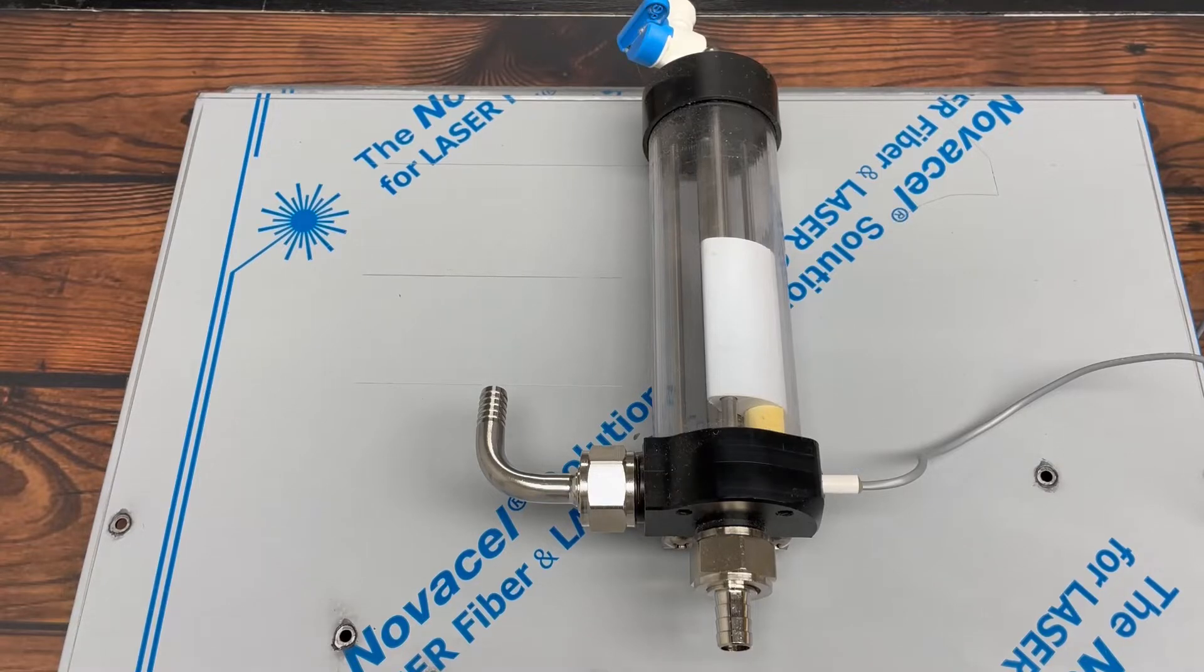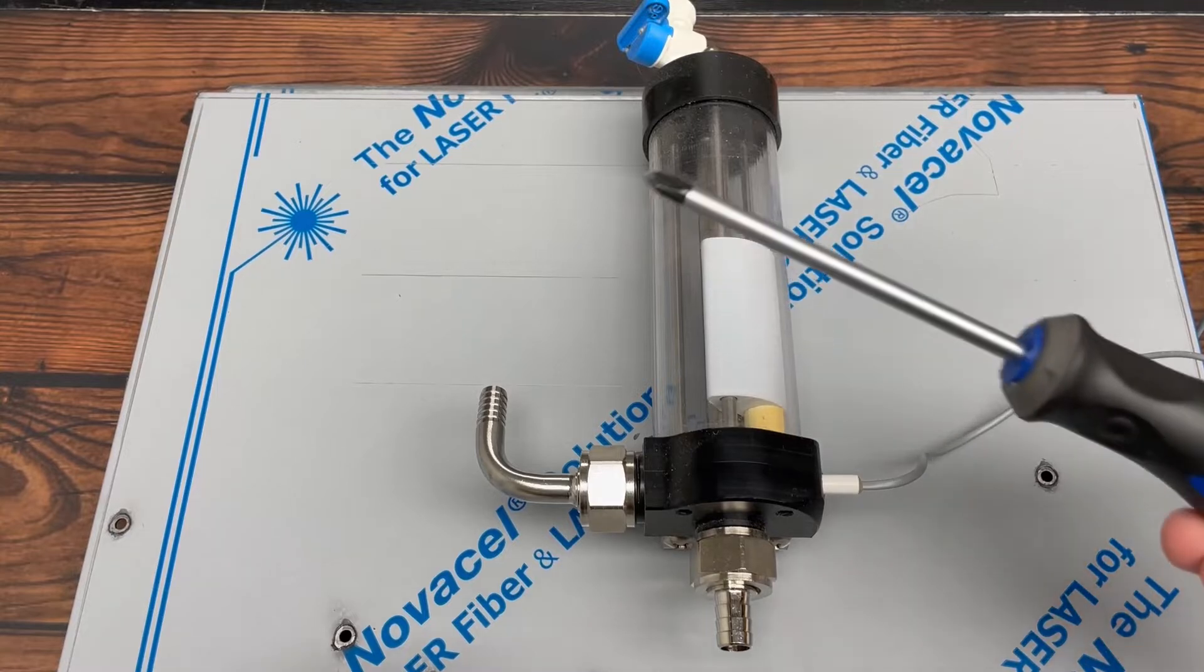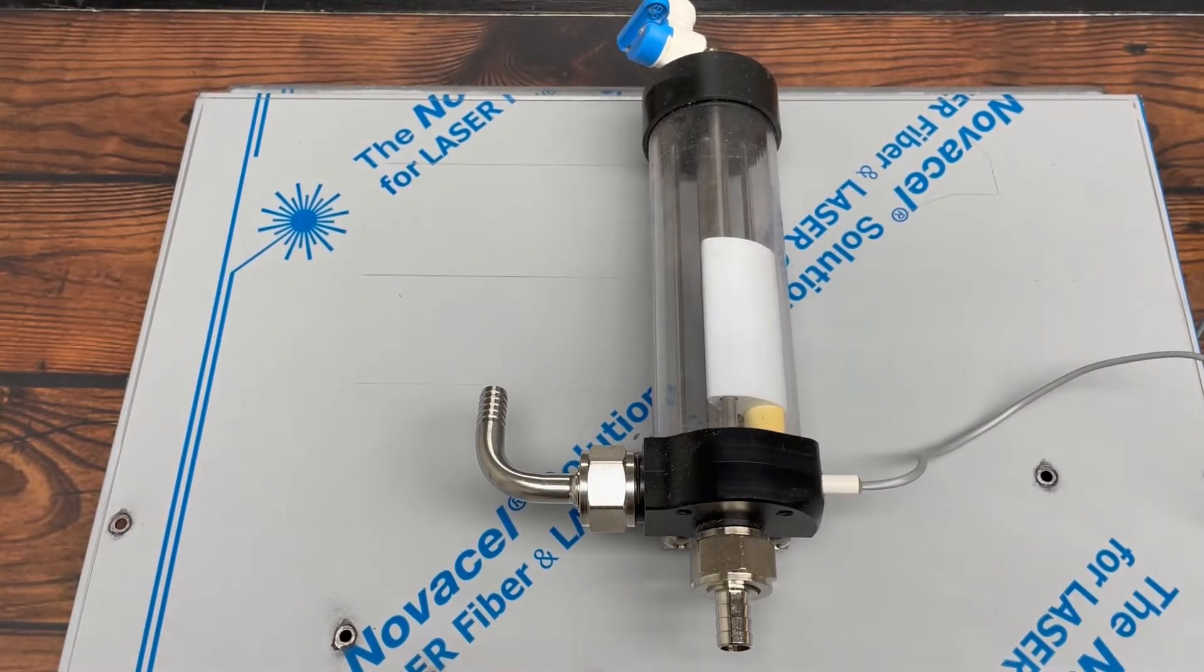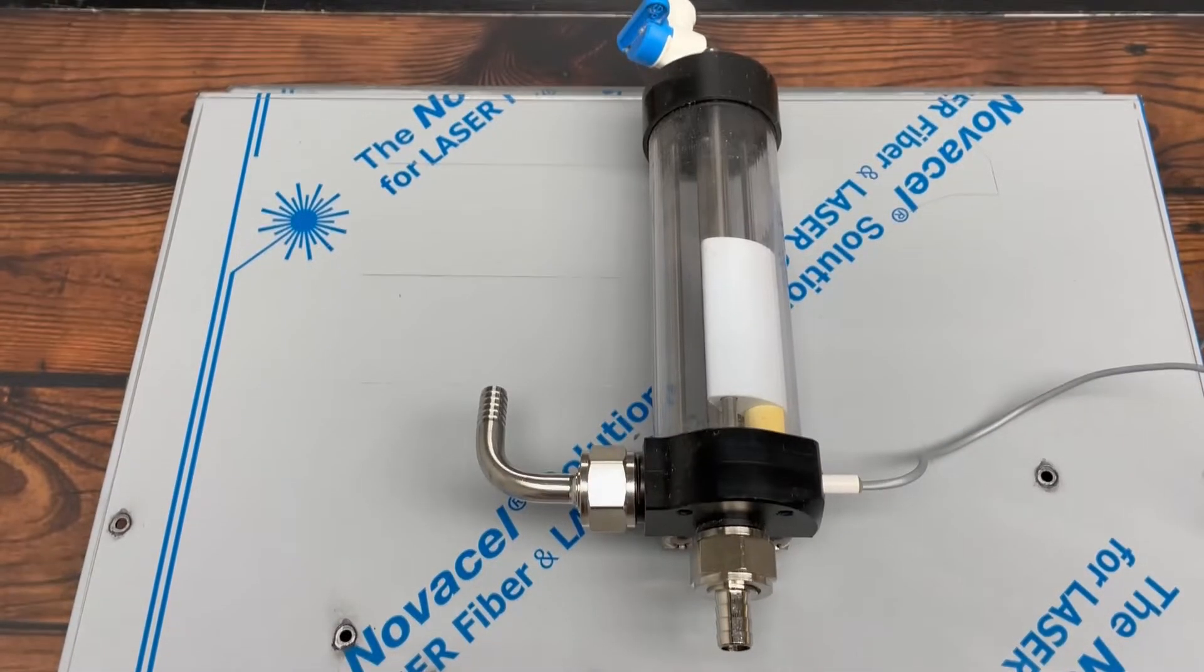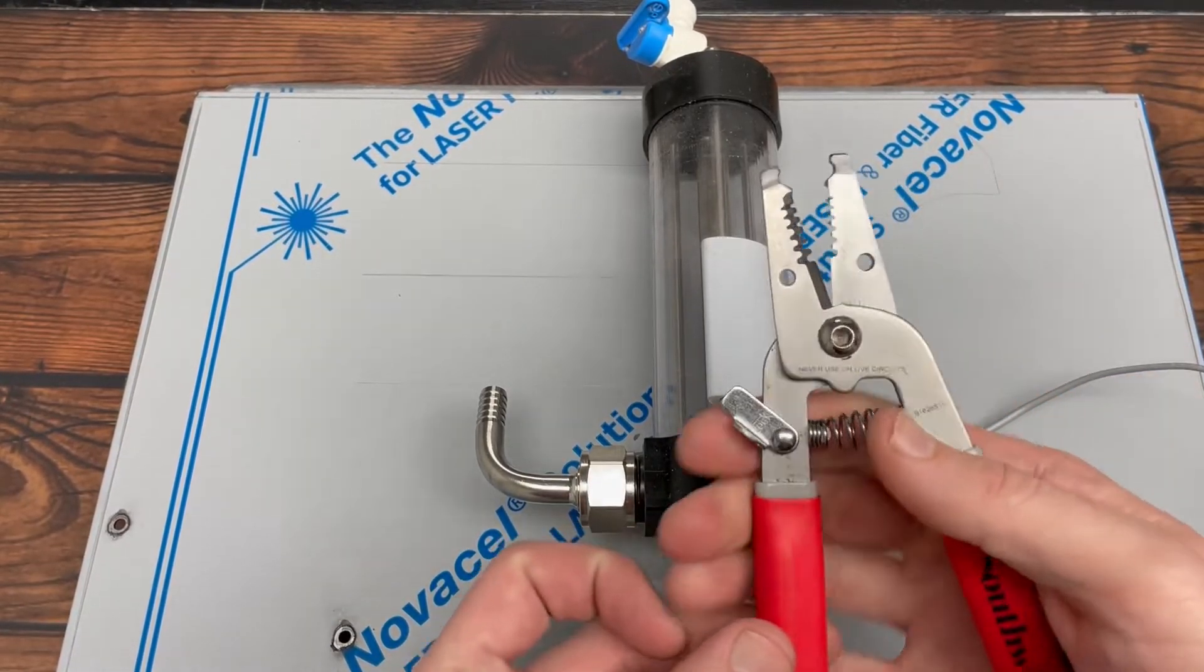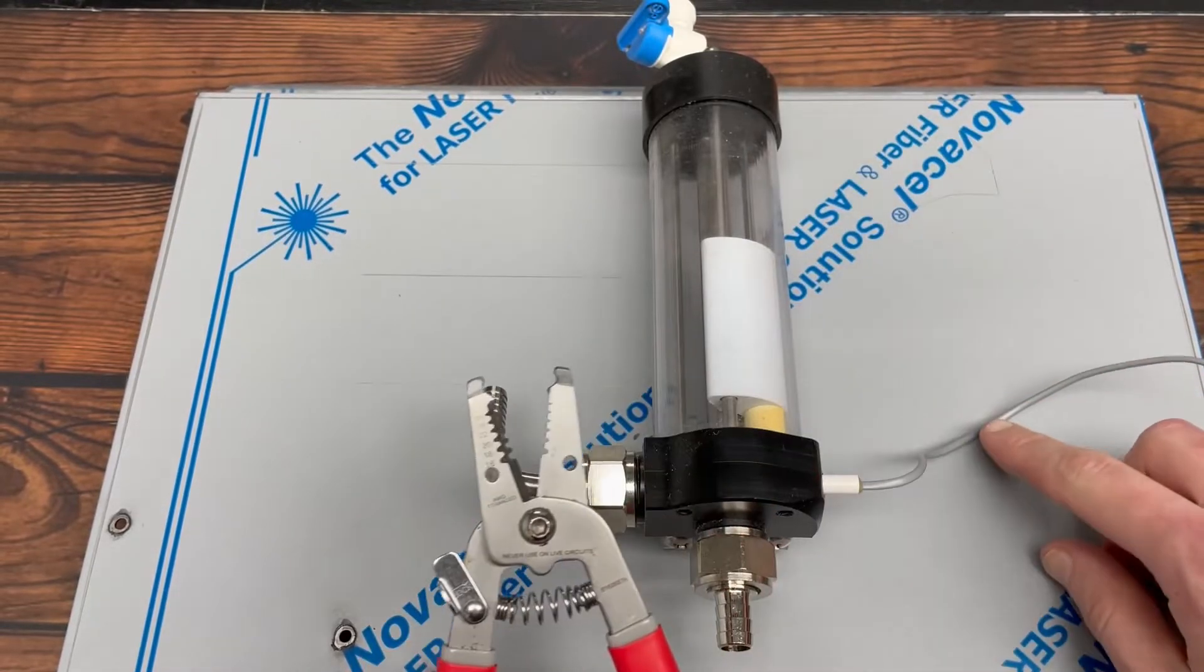An overview of the tools that you're going to need for this process. You're going to need a Phillips screwdriver, a large crescent wrench to get these beer nuts off, and you're going to need some wire strippers so we'll be stripping back some of these cables.